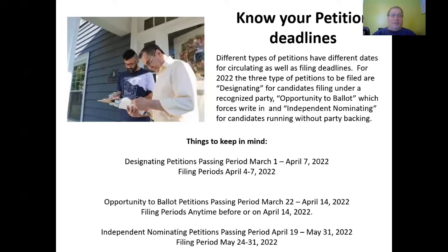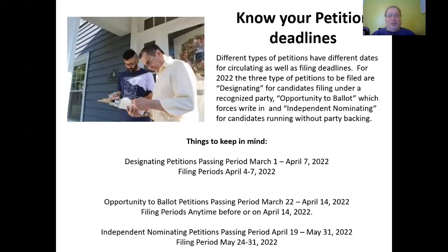The differences in these petitions: designating petitions are for candidates running on the major party lines — Democrat, Republican, Working Families, or Conservative. There is no Independence Party anymore. Opportunity to ballot petitions are for people who are members of that party but want to force a write-in candidacy instead of a regular candidacy where both names appear on the ballot. The rules for this have changed over the last few years. I'm not really sure why anybody would do this opportunity to ballot petition, other than the fact that maybe they missed the designating petition passing deadline and decided to go out after the designating petitions but before the opportunity ballot deadline to get enough signatures.